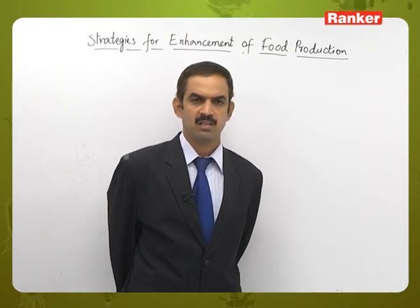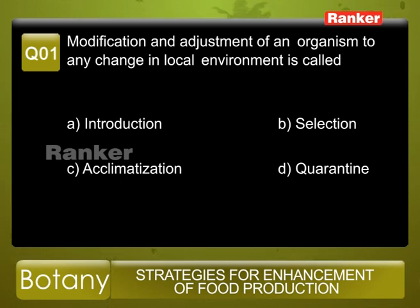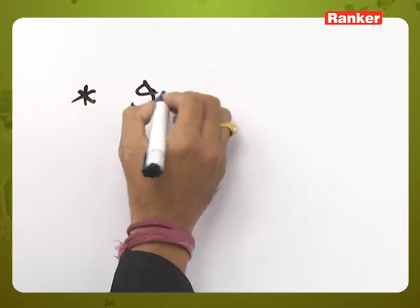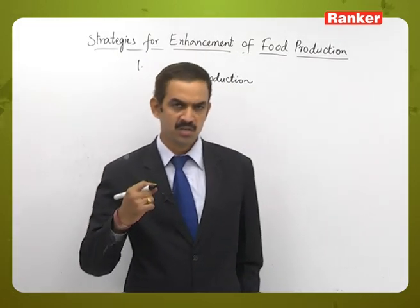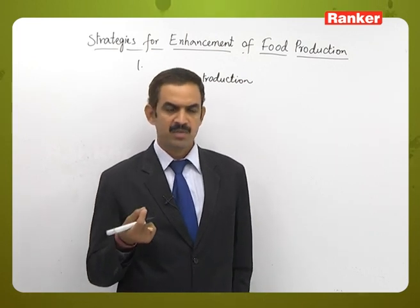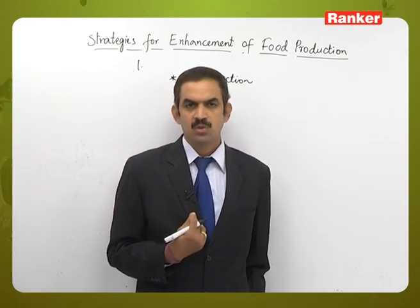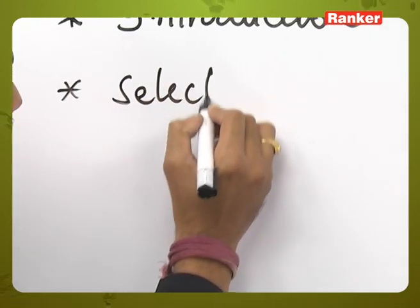Question number one: modification and adjustment of an organism to any change in local environment is called — the given options are: a) introduction, b) selection, c) acclimatization, and d) quarantine. Introduction is when a new plant is introduced to a new locality, taken from its native place and introduced to some new place where the plant will get adjusted.